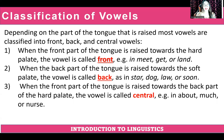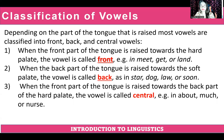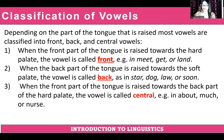When the back part of the tongue is raised towards the soft palate, the vowel is called back, as in star, dog, long, or soon. When the front part of the tongue is raised towards the back part of the hard palate, the vowel is called central, as in about, match, or nurse.